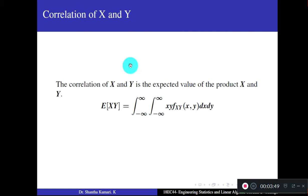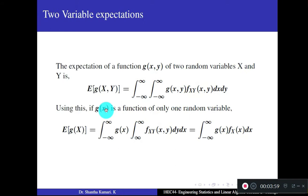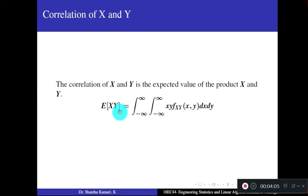The correlation of x and y uses a term called correlation, defined as the expected value of the product x·y. Taking g(x,y) = x·y in the general formula gives: E[XY] equals the double integral from minus infinity to infinity of x·y times the bivariate PDF f_XY(x,y) dx dy.